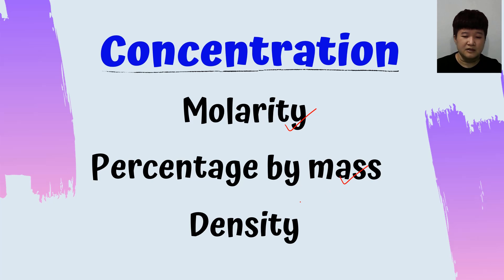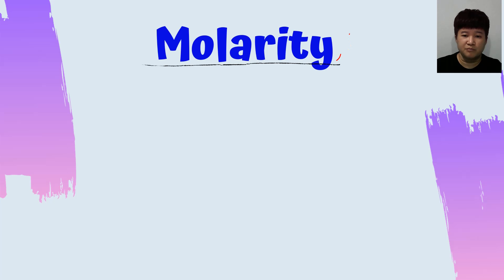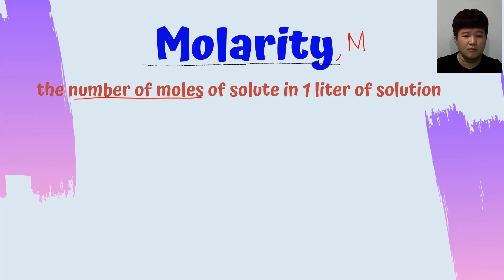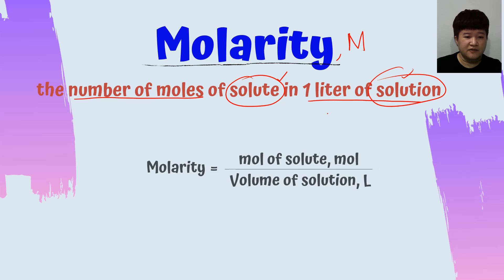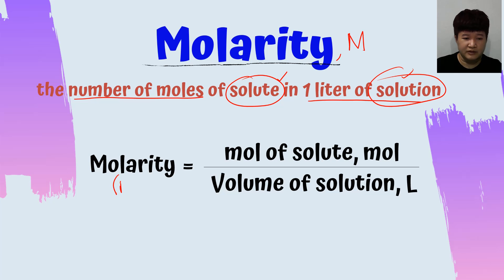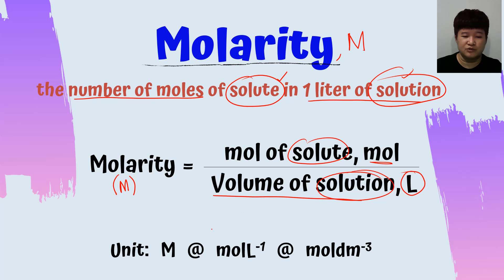Concentration has two types: molarity and percentage by mass, and we will also talk about density because density is their best friend. Molarity — the symbol is capital M — is the number of moles of solute in one liter of solution. The formula of molarity is: M equals moles of solute (in mol) divided by volume of solution (in liter), giving the unit mol per liter, or mol per decimetre cubed, since one liter equals one decimetre cubed. You can also use the unit M (molar).